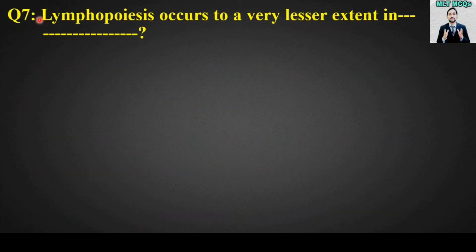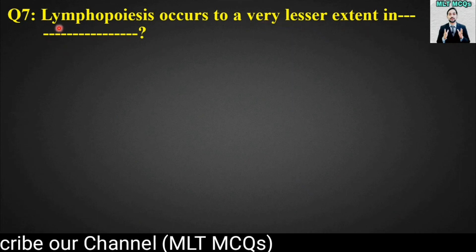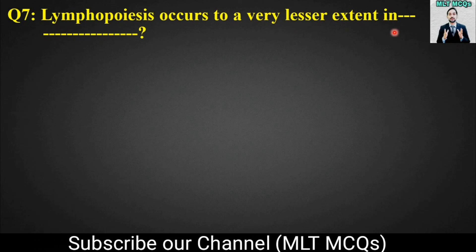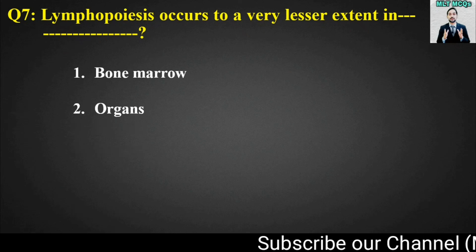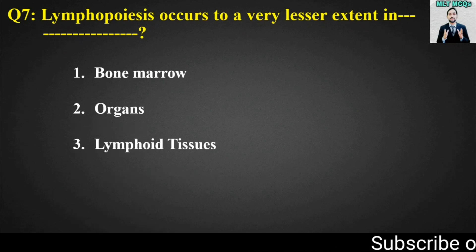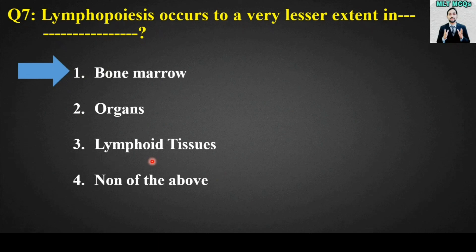The last MCQ: lymphopoiesis occurs to a very lesser extent in blank. Options are bone marrow, organs, lymphoid tissues, or none of the above. The right answer is option number one, bone marrow. Lymphopoiesis occurs to a very lesser extent in bone marrow, but mainly lymphopoiesis occurs in different organs and lymphoid tissues.